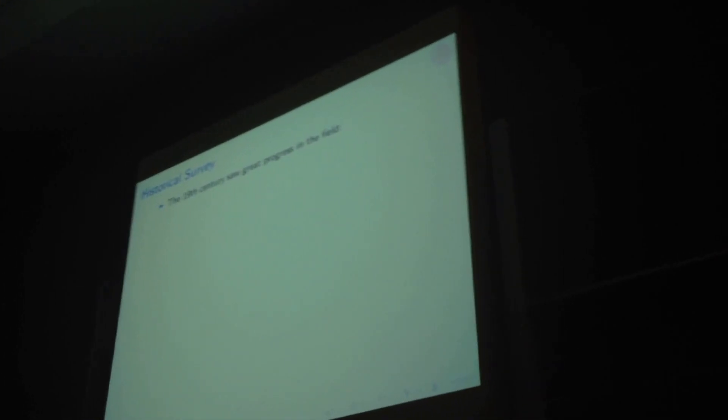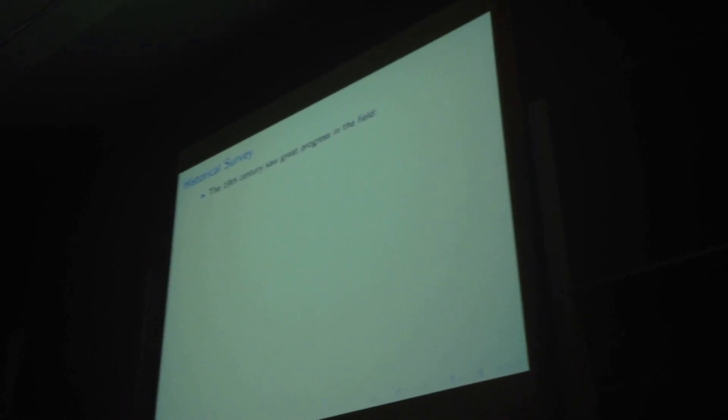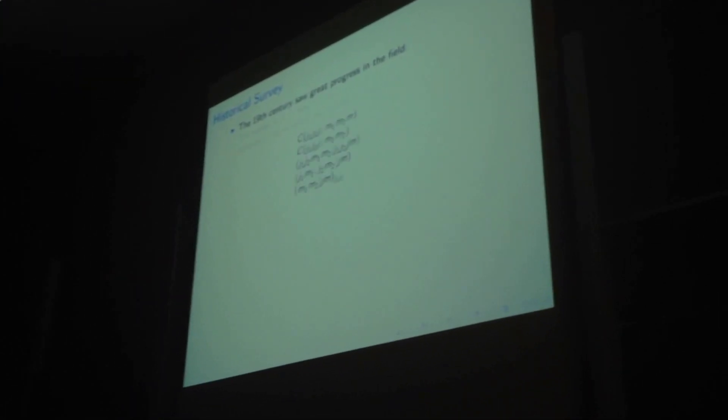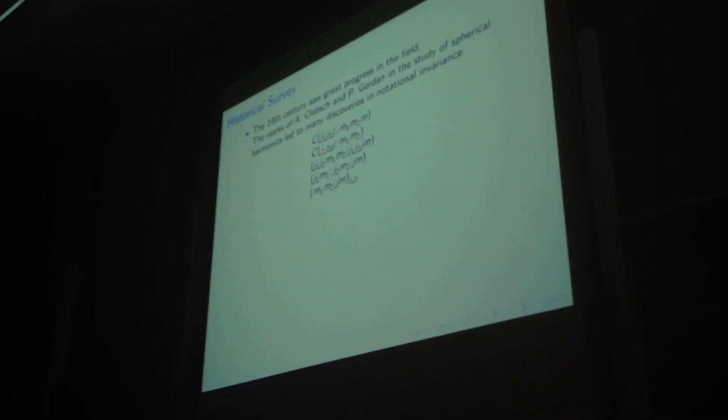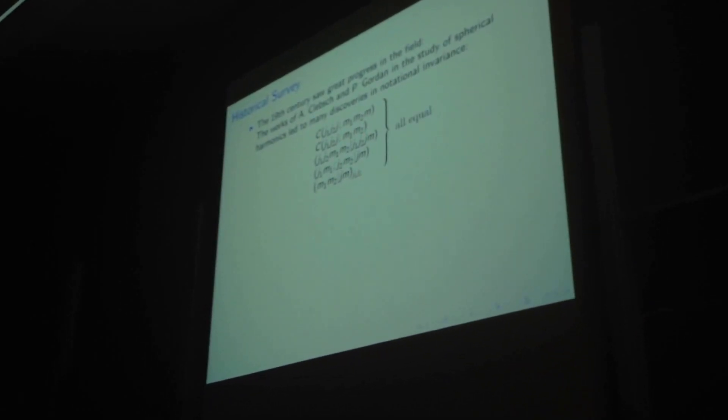This development continued throughout the modern era. In the 19th century, we saw great progress, and Fletcher Morton. We studied spherical harmonics, and saw, rather surprisingly, that C, J1, J2, J, M1, M2, M, etc., are all equal.